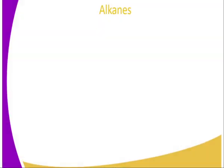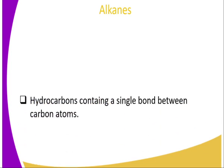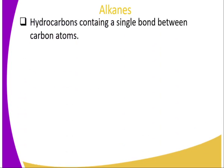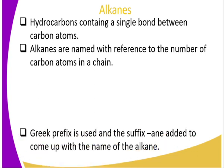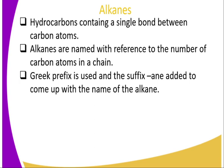So what are alkanes? Previously we have defined them as hydrocarbons containing a single bond between carbon atoms. Alkanes are named with reference to the number of carbon atoms in a chain. The Greek prefix is used and the suffix '-ane' is added to come up with the name of the alkane.